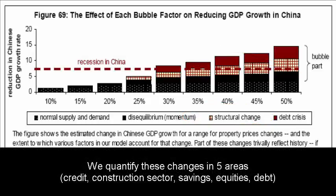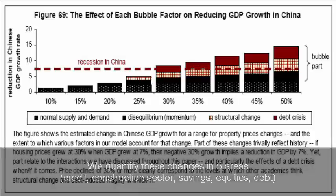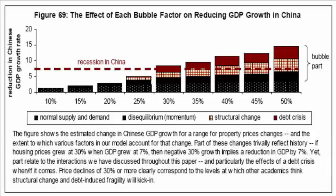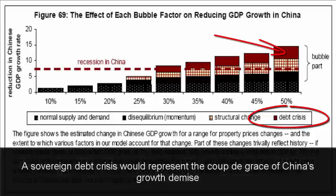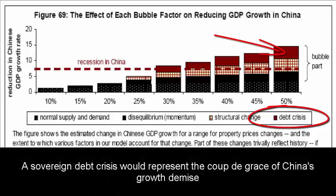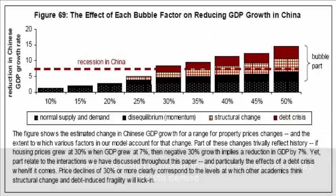For example, in credit markets, in construction markets, in savings markets. And the final factor that plays a role in this sudden change in property prices and growth relates to China's current debt levels.